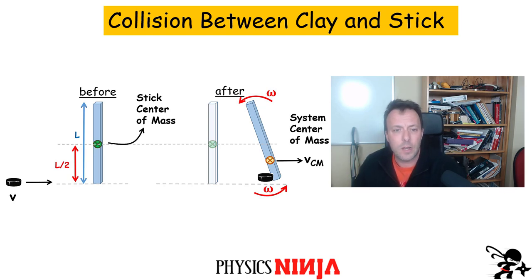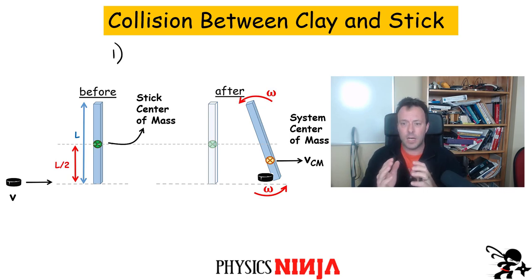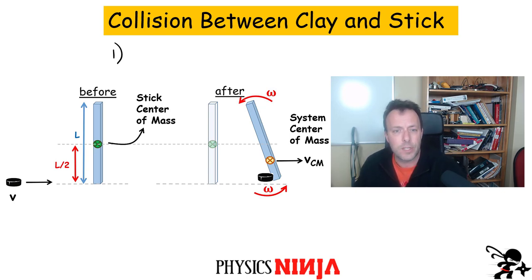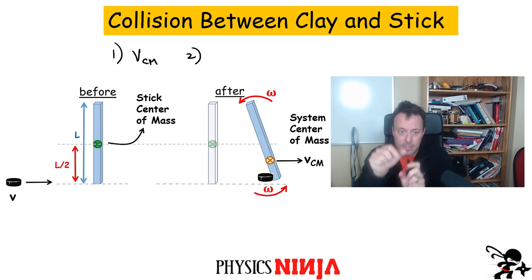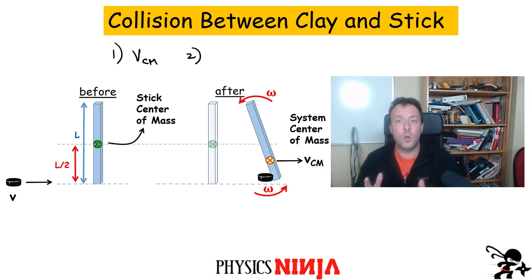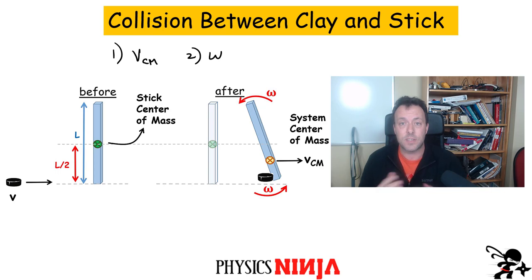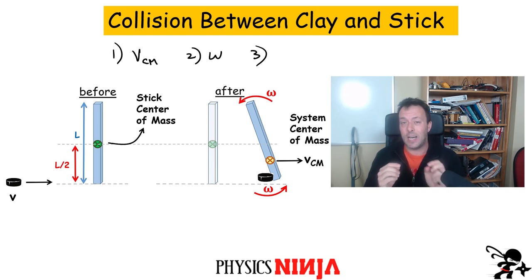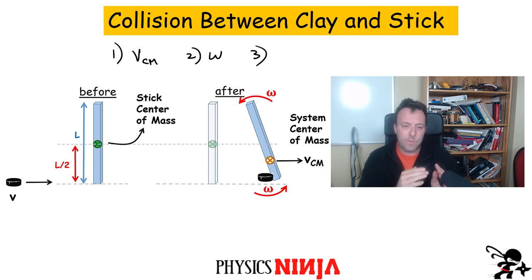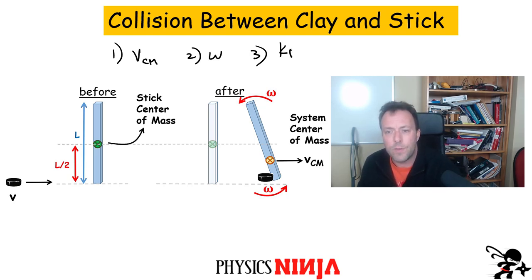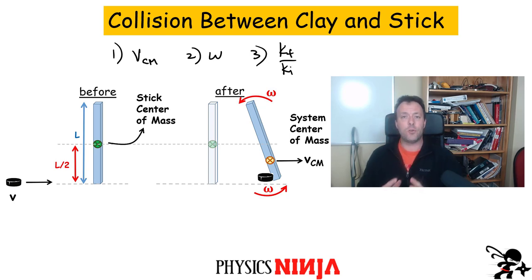We're interested in a few things. Number one: what is going to be the velocity of the center of mass of the system after the collision — we're going to calculate VCM. Number two: if the puck hits at some position different from the center of the stick, it's not only going to move but also rotate, acquiring some angular velocity — we'll calculate the final angular velocity. And third, since this is an inelastic collision, we lose some energy, so we'll calculate the energy before and after, looking at the ratio of final kinetic energy to initial kinetic energy.